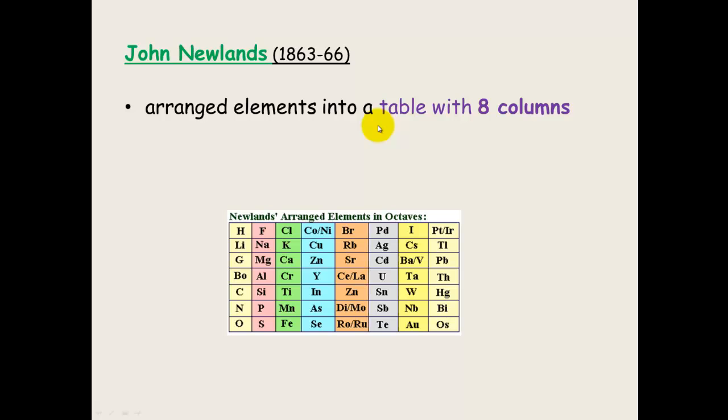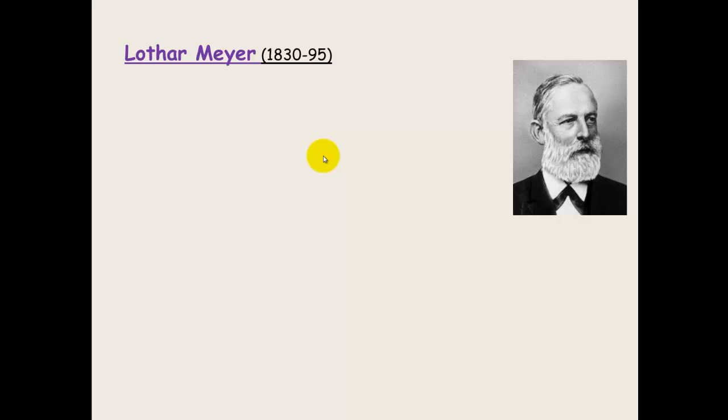John Newlands. He arranged the elements into a table with eight columns. And he believed or found that elements exhibited similar behavior when they were put into these sort of columns. So they had similar chemical properties.